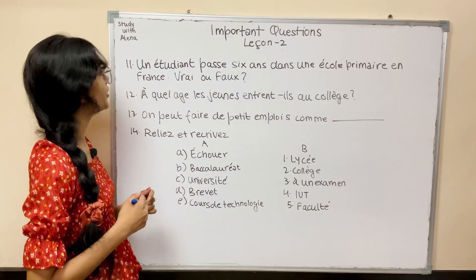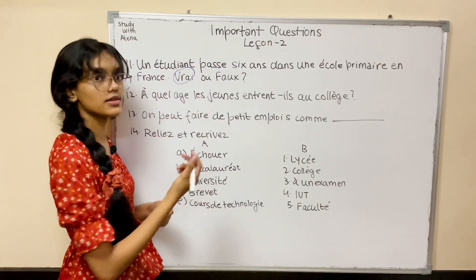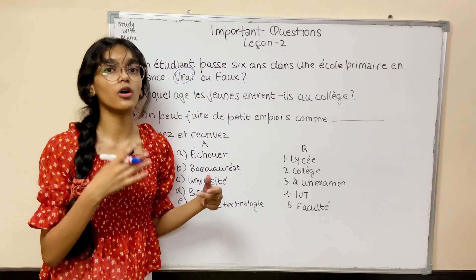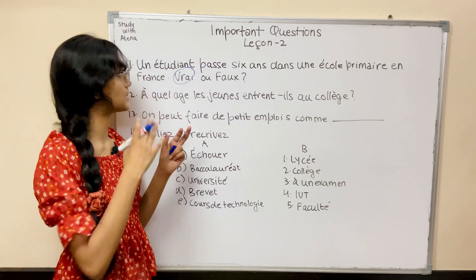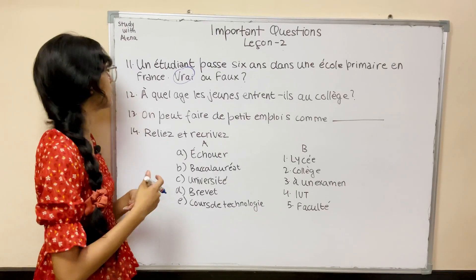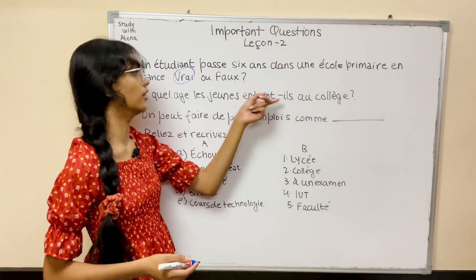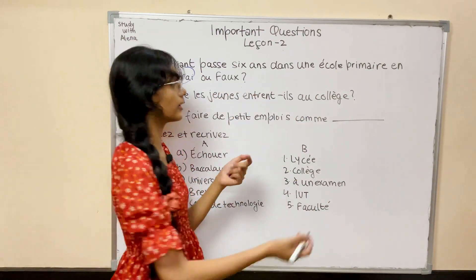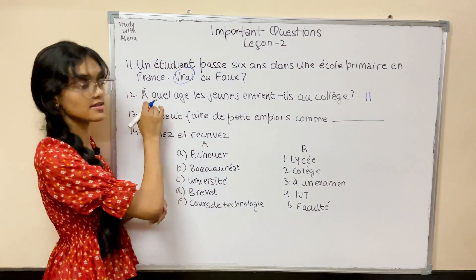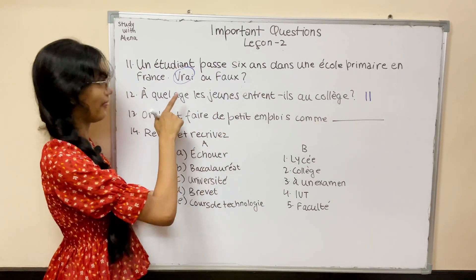Question 11: Un étudiant passe six ans dans l'école primaire en France — vrai ou faux? That is true. A student passes six years in primary school in France. Go through how many years a child spends at each stage so you can answer true/false or fill-in-the-blank questions. Question 12: À quel âge les jeunes entrent-ils au collège? At what age do young people join collège? It's at 11 years. Write the full answer, not just the number — this is a descriptive question.